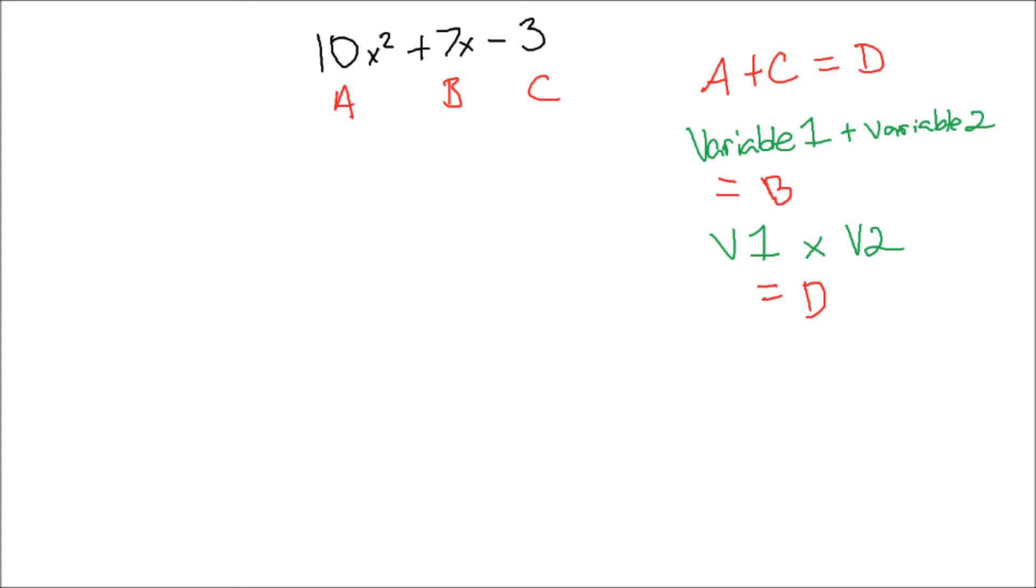We learned from my previous video that to factor trinomials properly, we need to find two variables that multiply together to get C and add together to get B. In this case, however, C is actually D. C does not exist at the moment.